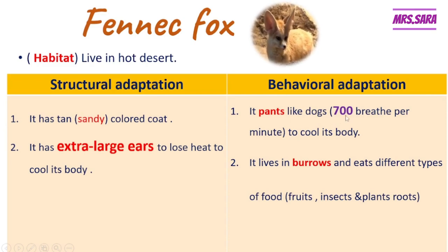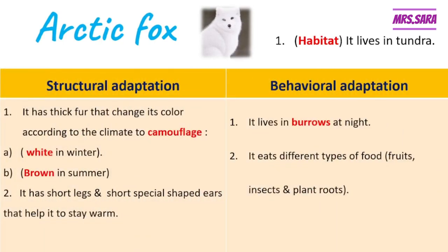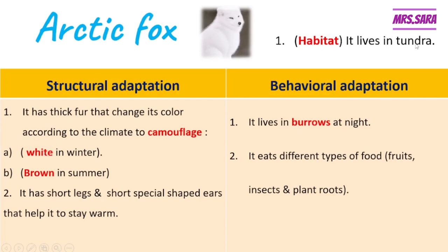Now, how about the arctic fox, Primary 4? The arctic fox lives in a place called tundra. Tundra is a type of environment that changes its climate from summer to winter. The structural adaptation of the arctic fox is that it has thick fur that changes its color according to the climate, to camouflage and blend or hide from its predators or prey. In winter, the tundra has ice, so the fur of the arctic fox becomes white; but in summer, when there is no ice, the fur becomes brown.